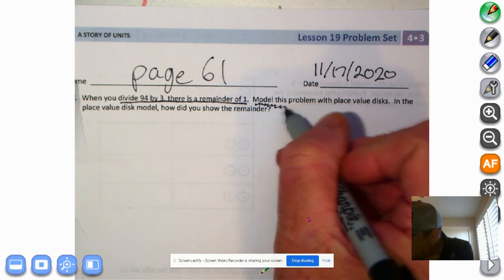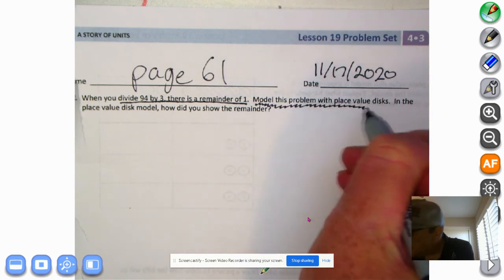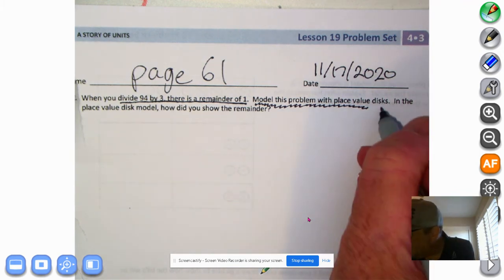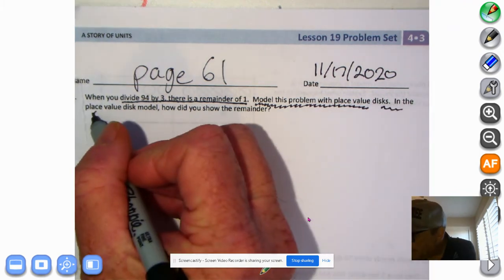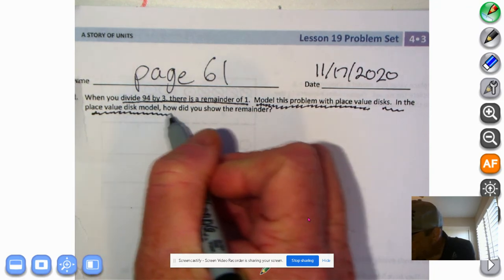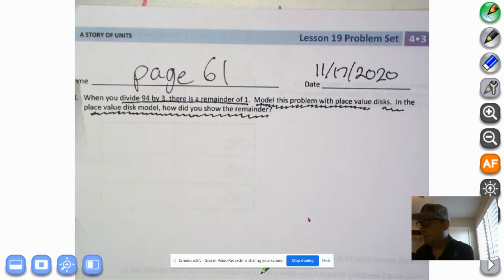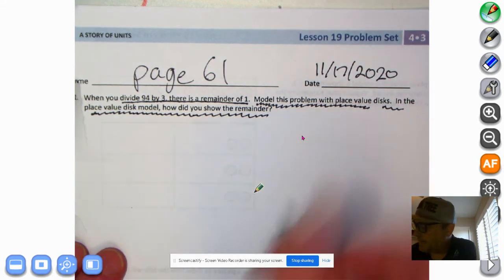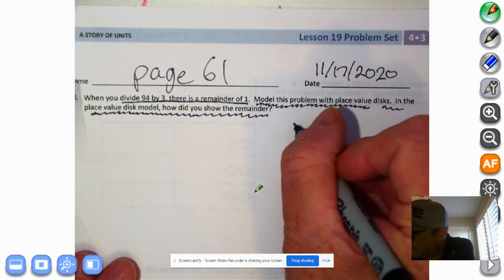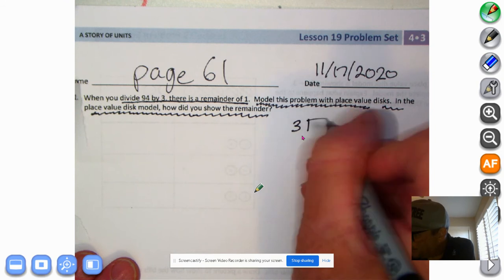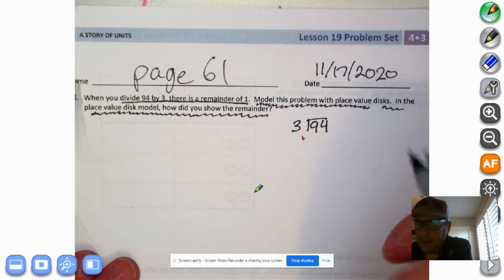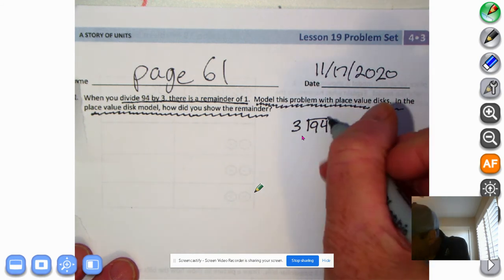It says model this problem with place value disks. In the place value disks model, how did you show the remainder? Remember this from yesterday, let's get right to it. So our problem is 94 divided by 3. Our divisor is 3, our dividend is 94. We already have our answer, we know there's a remainder of 1 so we put that right up here, R1.